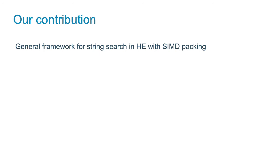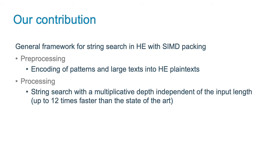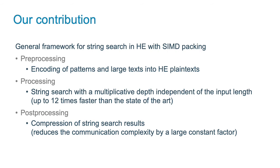In this work, we provide a general framework how to design secure naive string search using HE with SIMD packing. First, we show how to encode patterns and large texts into homomorphic plaintexts, such that they are presented by arrays of characters and remain searchable. Then, we demonstrate how to search over such ciphertexts. For this task, we designed an algorithm whose multiplicative depth is independent of the input length. This allowed us to optimize encryption parameters and resulted in up to 12 times faster running time than in the state of the art. And finally, we show how to compress the results of string search before sending them back to the client. This reduces the communication complexity by a large constant factor.